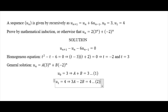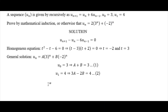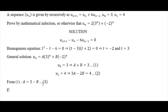We now solve these two equations simultaneously to find A and B. From equation one, we get A = 3 - B. We call this equation three, and substitute it into equation two.